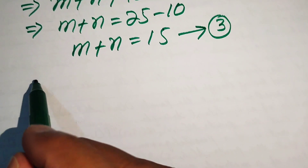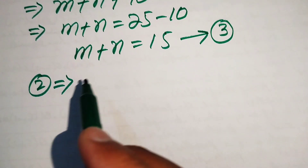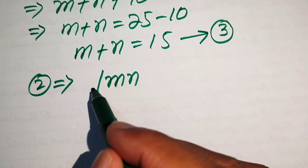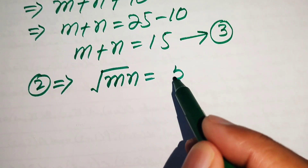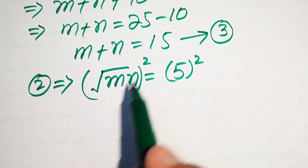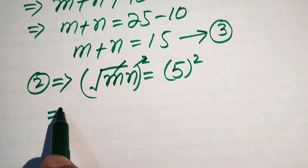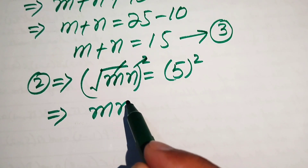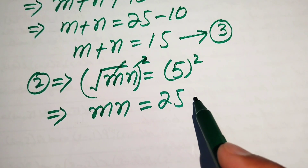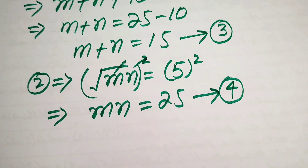Now we square both sides of equation number 2: (√(mn))² = 5². The square and square root cancel, giving us mn = 25. We call this equation number 4.